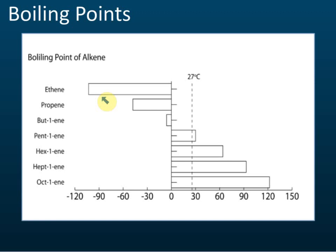There is a line at 27 degrees Celsius on the graph, which represents room temperature in Malaysia — we take 27 degrees Celsius as room temperature. The first three alkenes — ethene, propene, and butene — have boiling points lower than room temperature. This means they exist as gases at room temperature, because at 27 degrees Celsius they have already boiled and become gas.